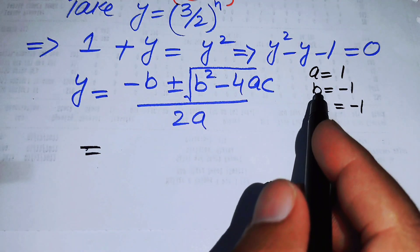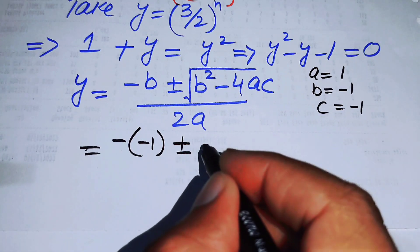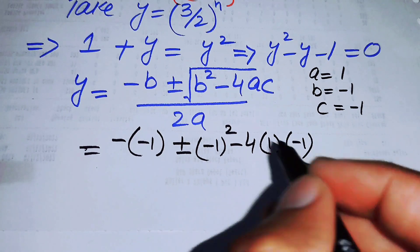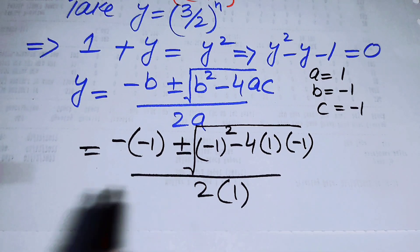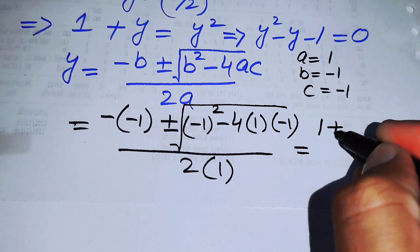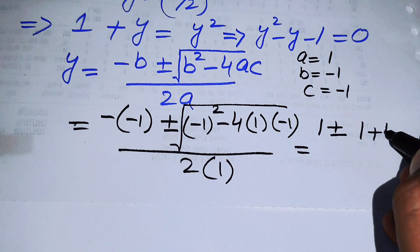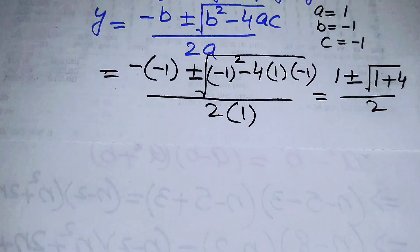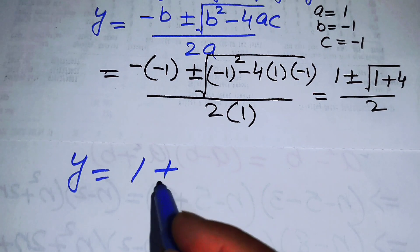Plugging into the quadratic formula y equals (−b ± √(b² − 4ac)) / 2a, we substitute: minus b gives minus times minus 1, b squared gives 1 squared which is 1, and minus 4 times a times c gives minus 4 times 1 times minus 1, which is plus 4. So we get y equals (1 ± √5) / 2.